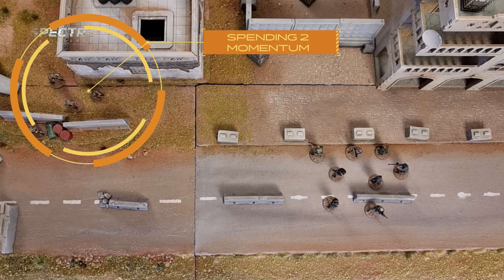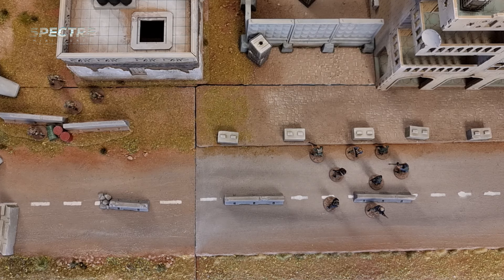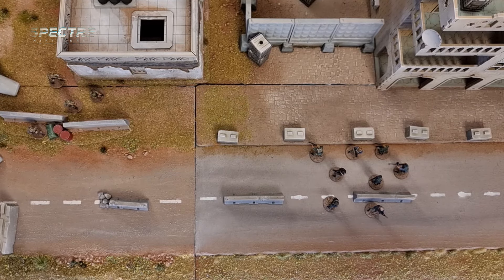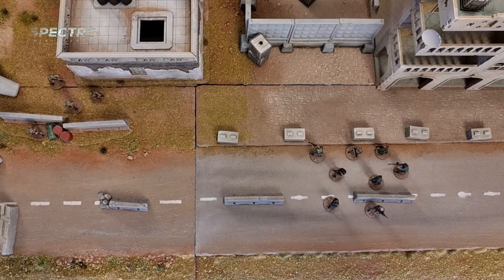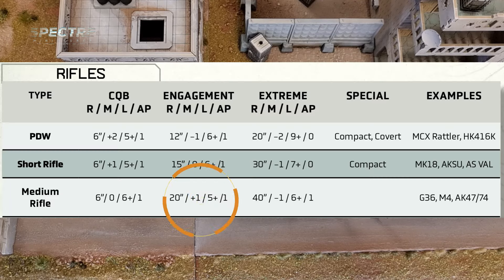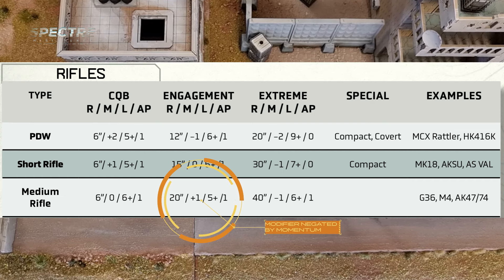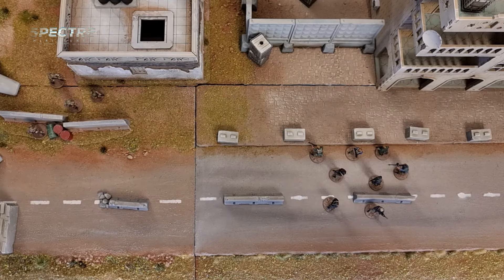If tier 2 had decided to spend two momentum on this action to engage with the target element, here's how it would have played out. Each figure in the engaging element rolls two dice because they are shooting twice. Each additional momentum in an engagement action has a minus one modifier to accurate fire, so using two momentum means it is a minus one which negates the plus one modifier they would otherwise get for being in engagement range. They need to equal or beat the ballistics value of four.